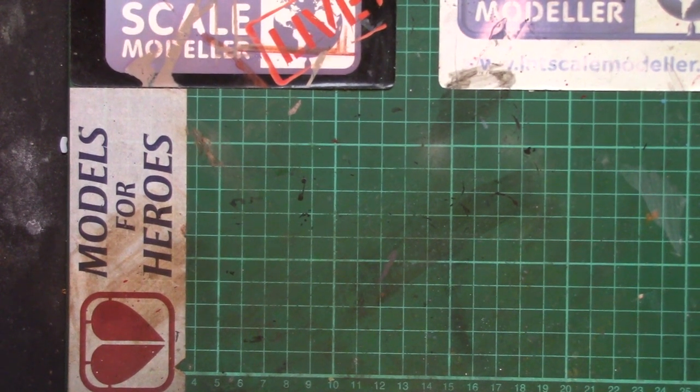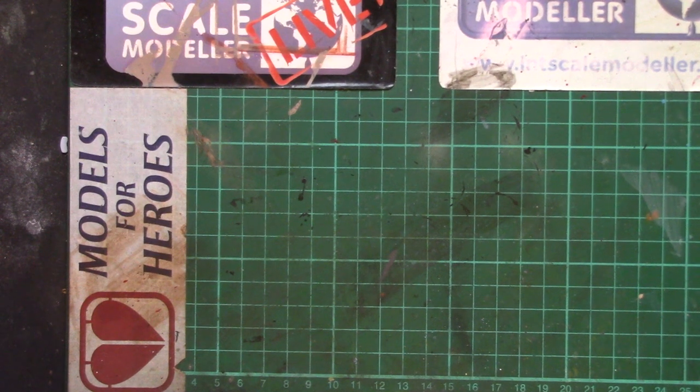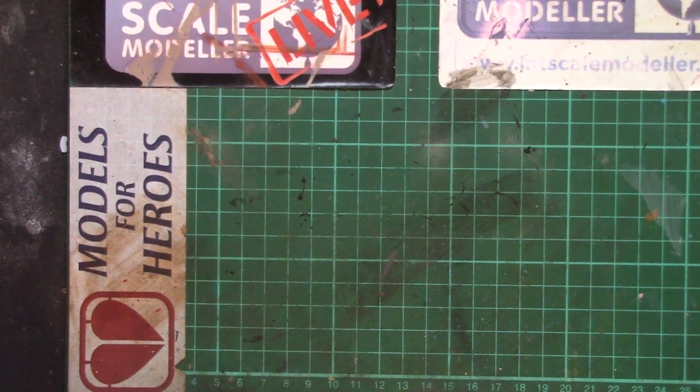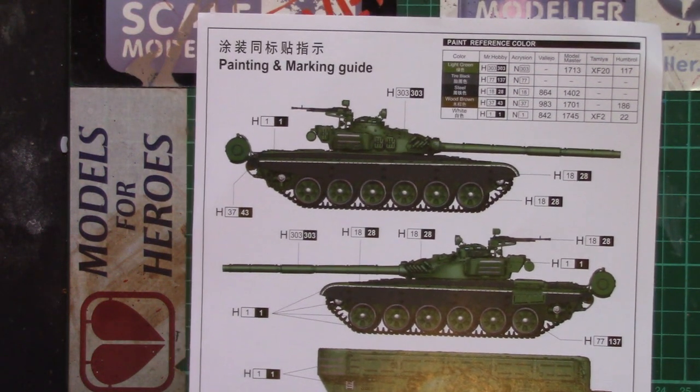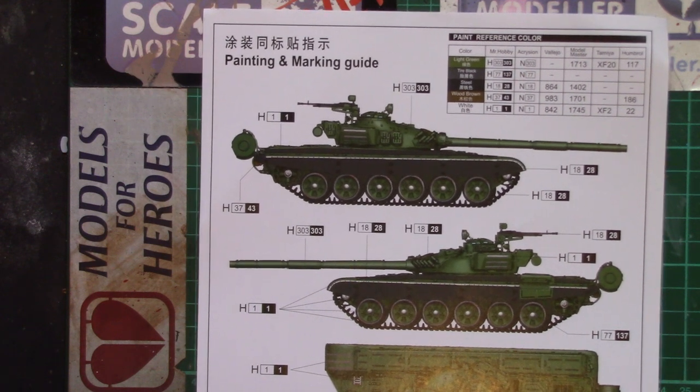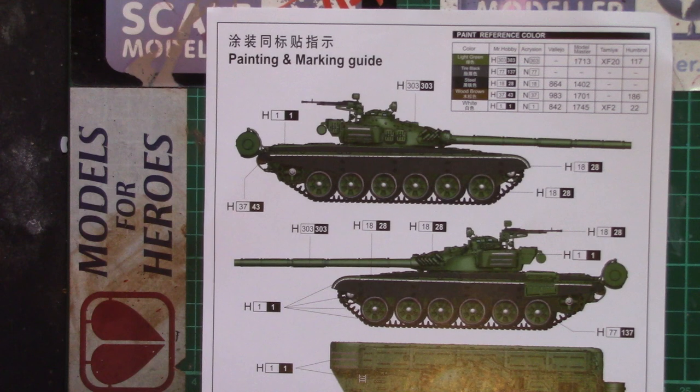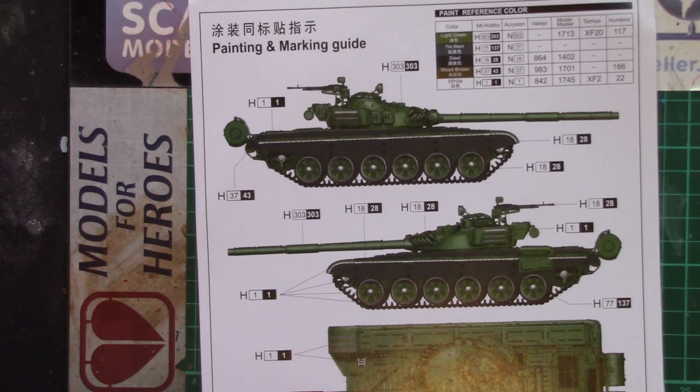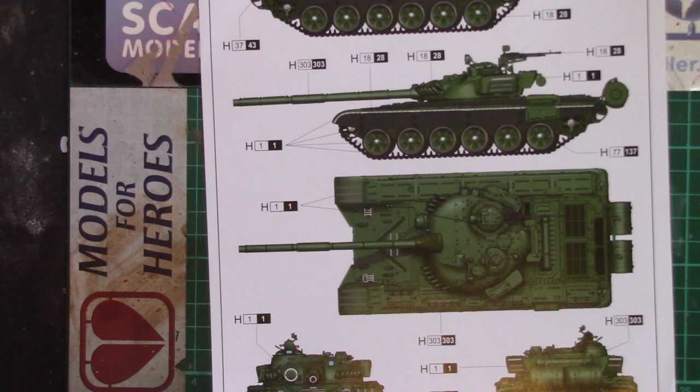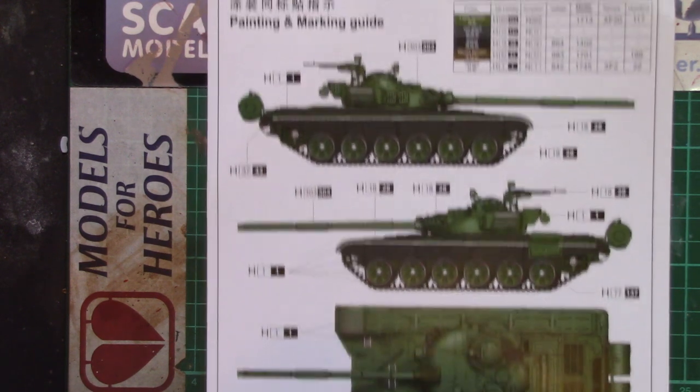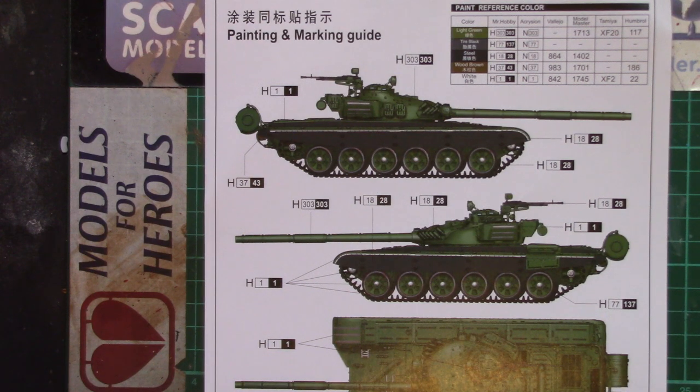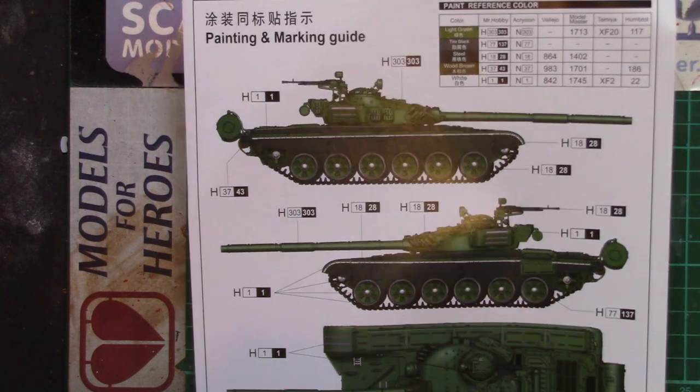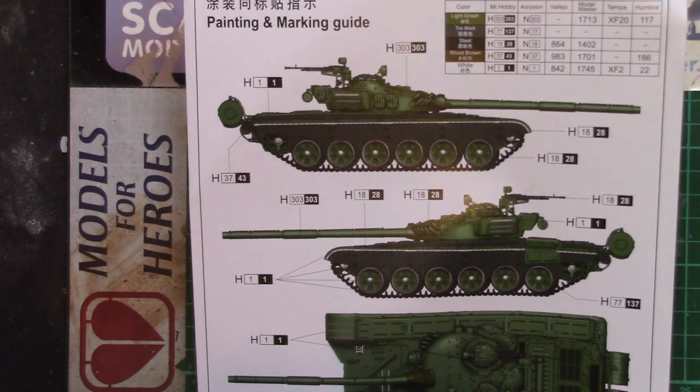I've put all the sprues back in the box and forgot to take the instructions out. First thing we have is the paint and markings guide. Yeah, pretty much ignore the paint callouts. It's a Russian tank, so green, black, and a bit of silver and maybe a bit of brown for the log. Doesn't even call out any markings on there so probably don't even need the decals at all anyway.